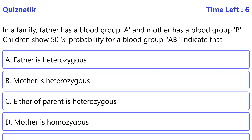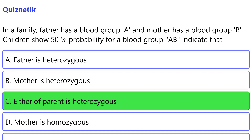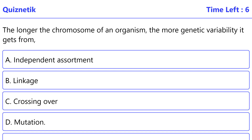In a family, the father has blood group A and the mother has blood group B. Children show 50 percent probability for blood group AB. This indicates the correct option is C: either or both parents are heterozygous.